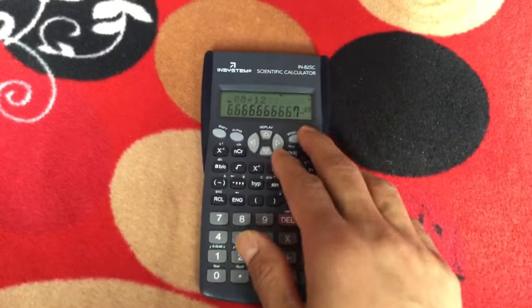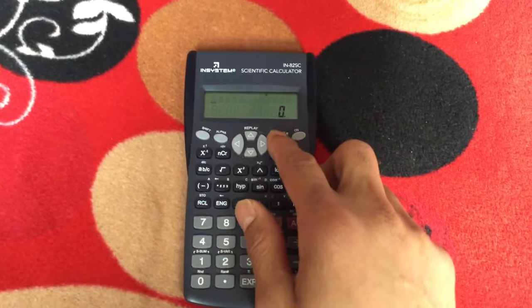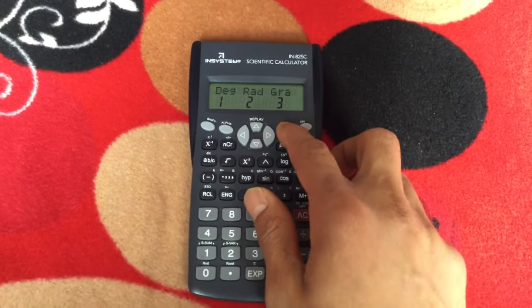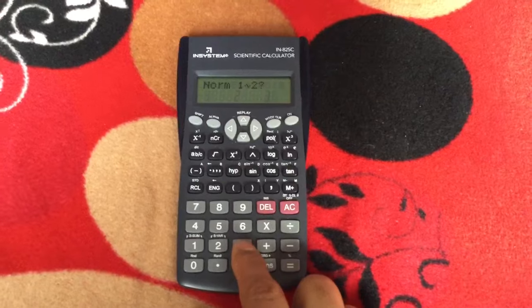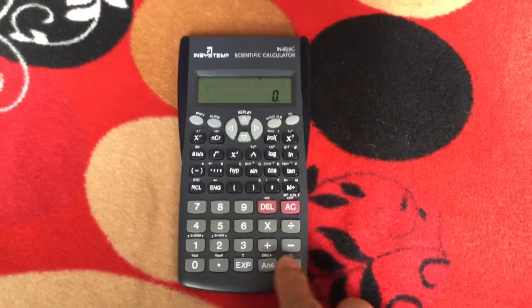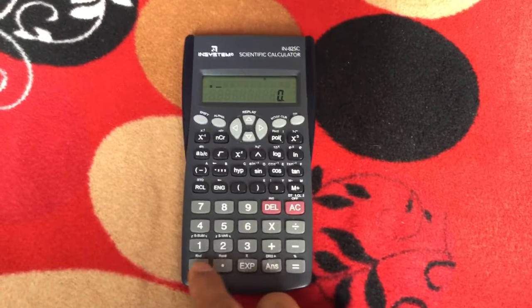So how to fix this? In order to fix this, again go to mode clear, press twice and thrice when it shows, just press three and then press true. Now what you can see is if you again just type that same problem, it will just show the correct answer.